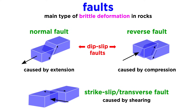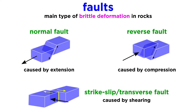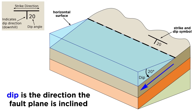Normal and reverse faults are called dip-slip faults because fault motion, or slip, is parallel to the fault's dip. This is in contrast with strike-slip faults, where slip is perpendicular to the dip. In geology, dip refers to the direction that the fault plane is inclined.